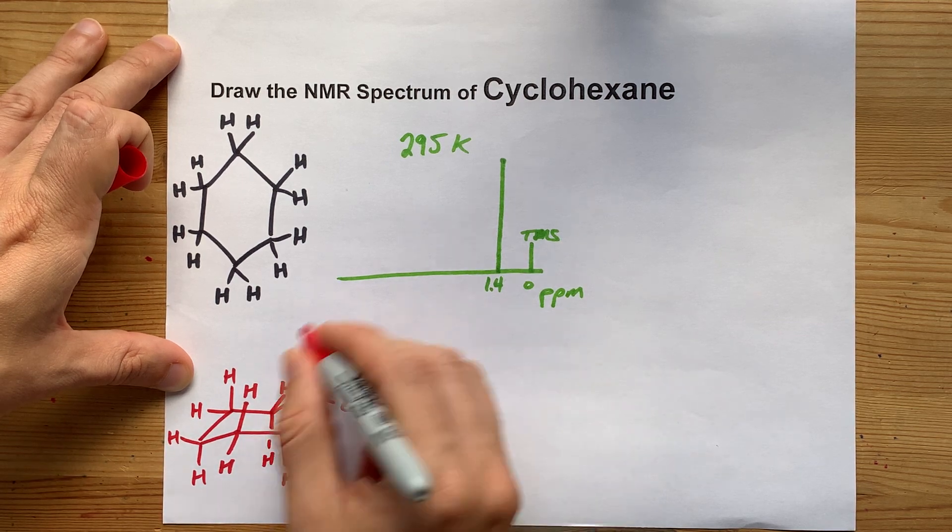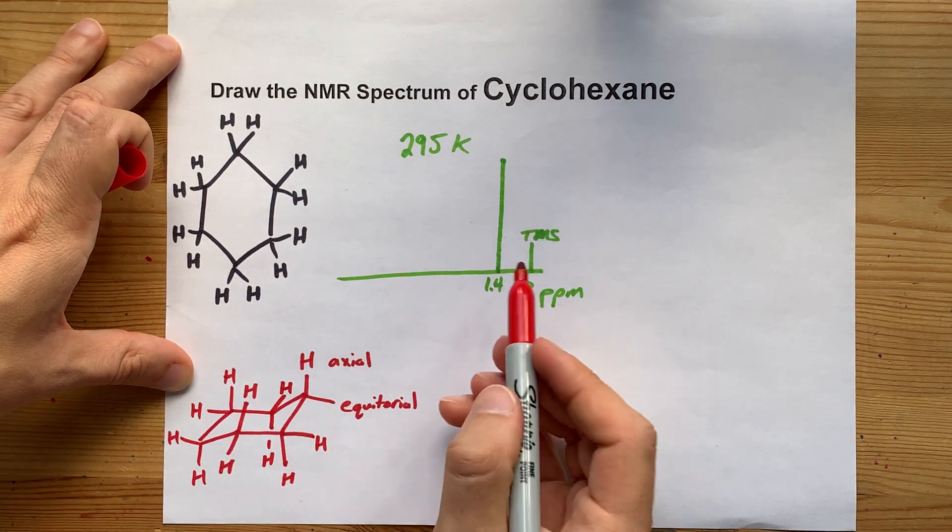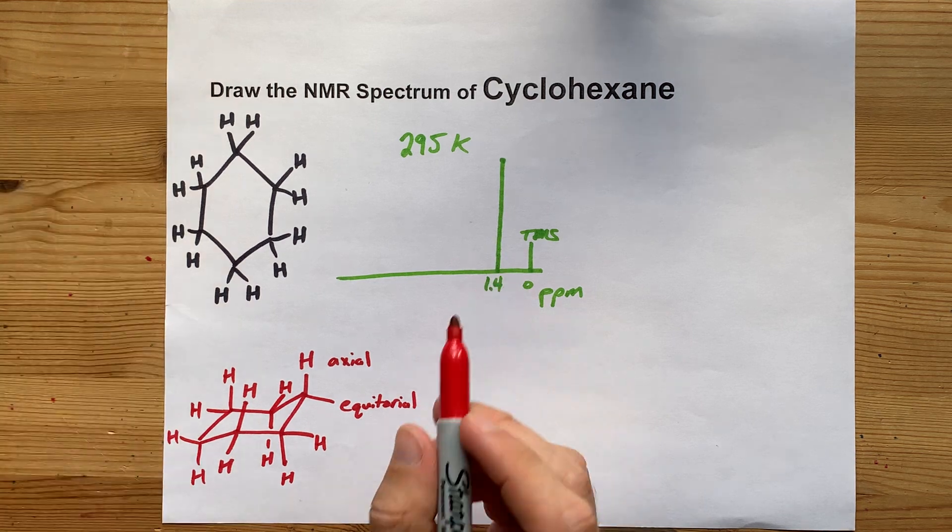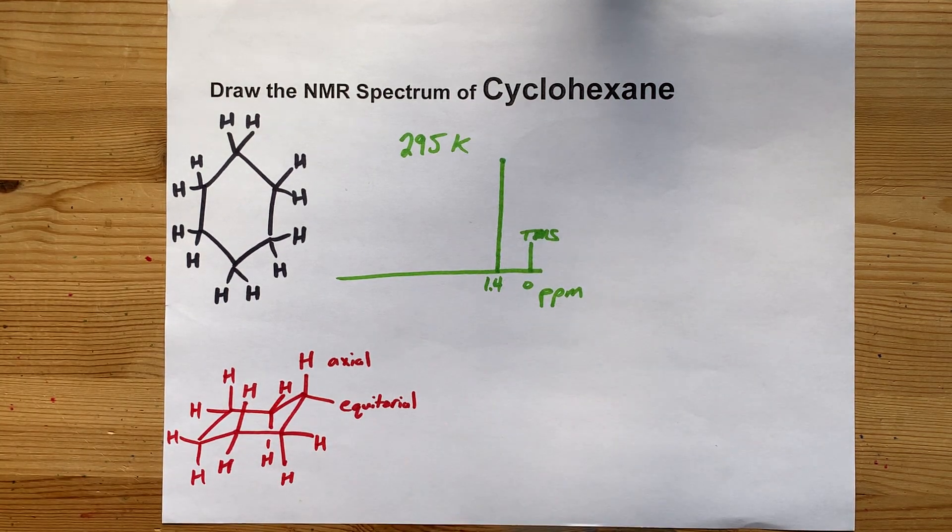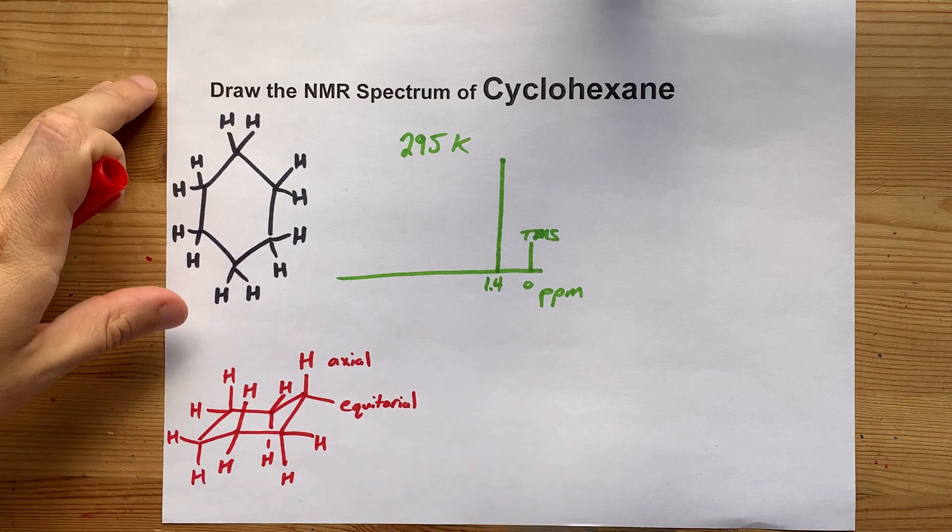And at room temperature, they're flipping back and forth. So you end up with one sharp peak that actually represents the average of the two.